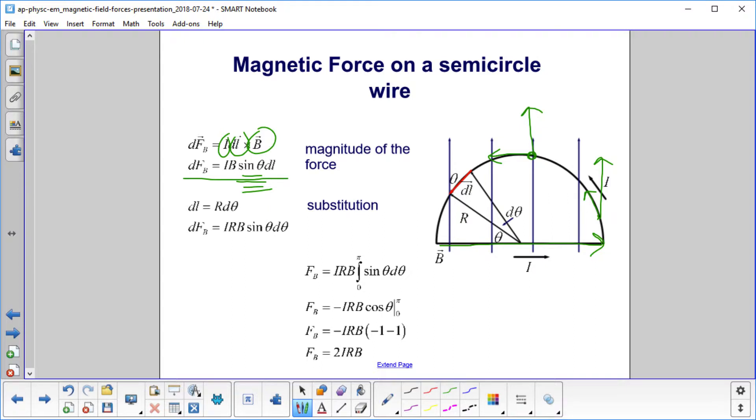Well, we've got theta and we have DL. We need to get those variables the same. Now we're going to use the relationship between DL, and I'll just draw a separate triangle here. Here's DL. Right here.